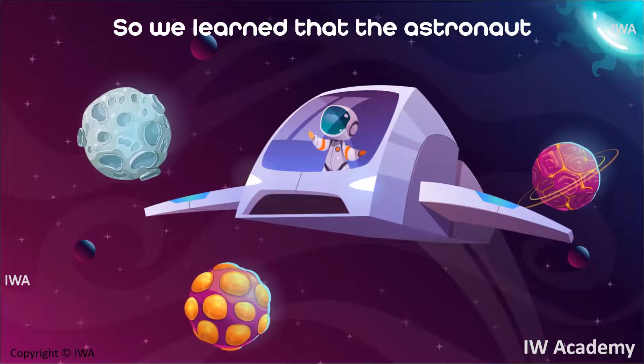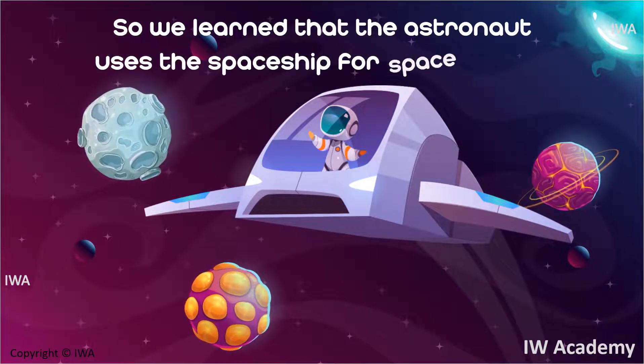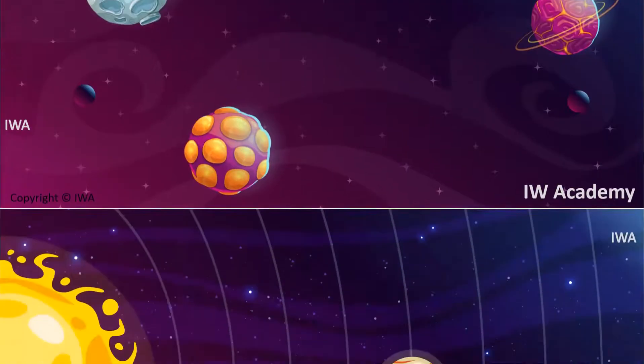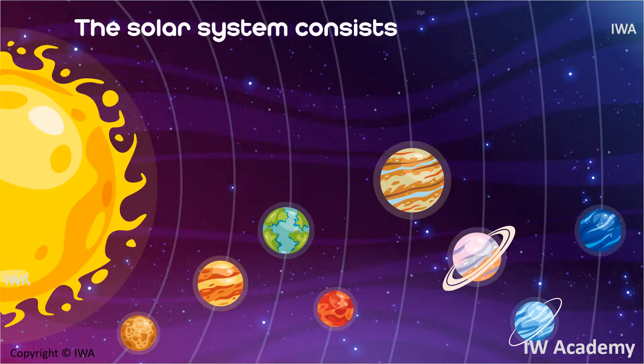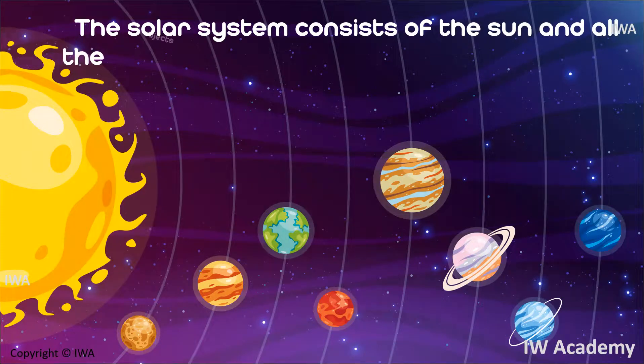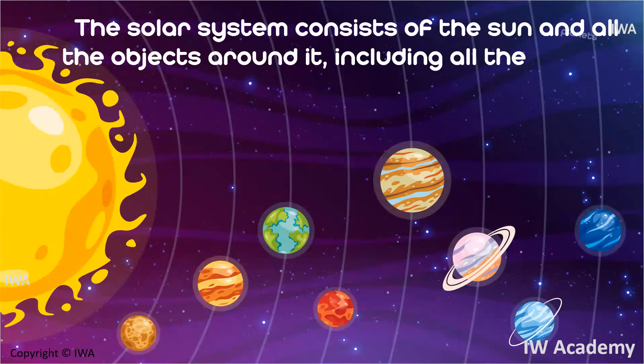So we learned that the astronaut uses the spaceship for space travel. We also learned that the solar system consists of the sun and all the objects around it, including all the planets.